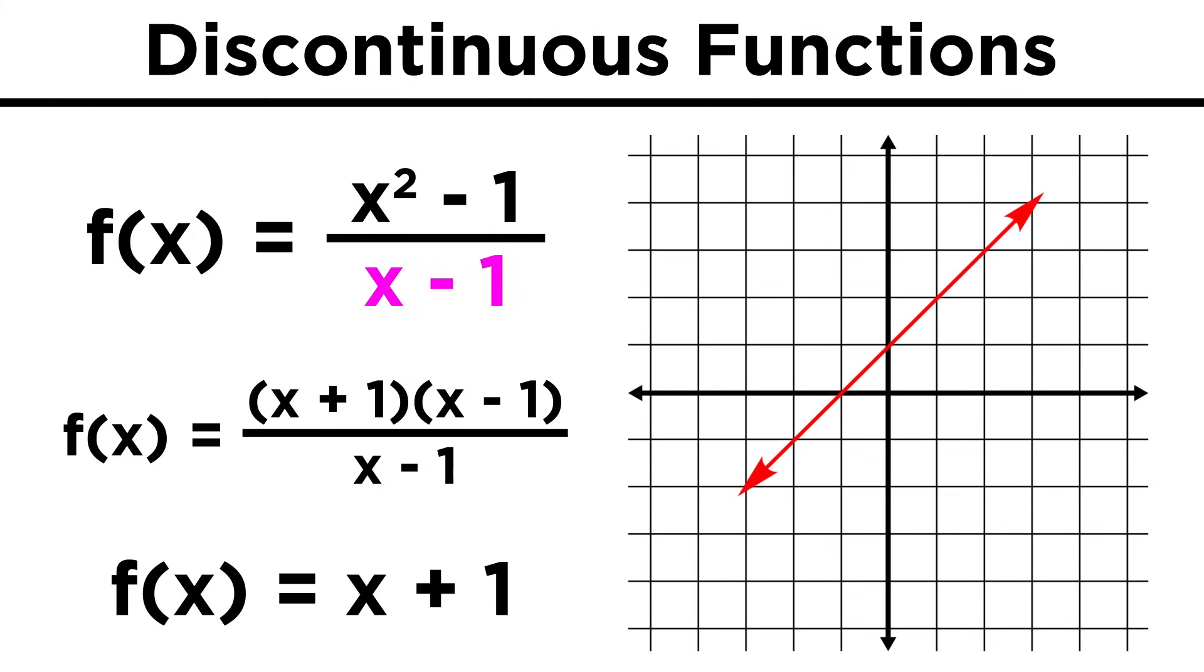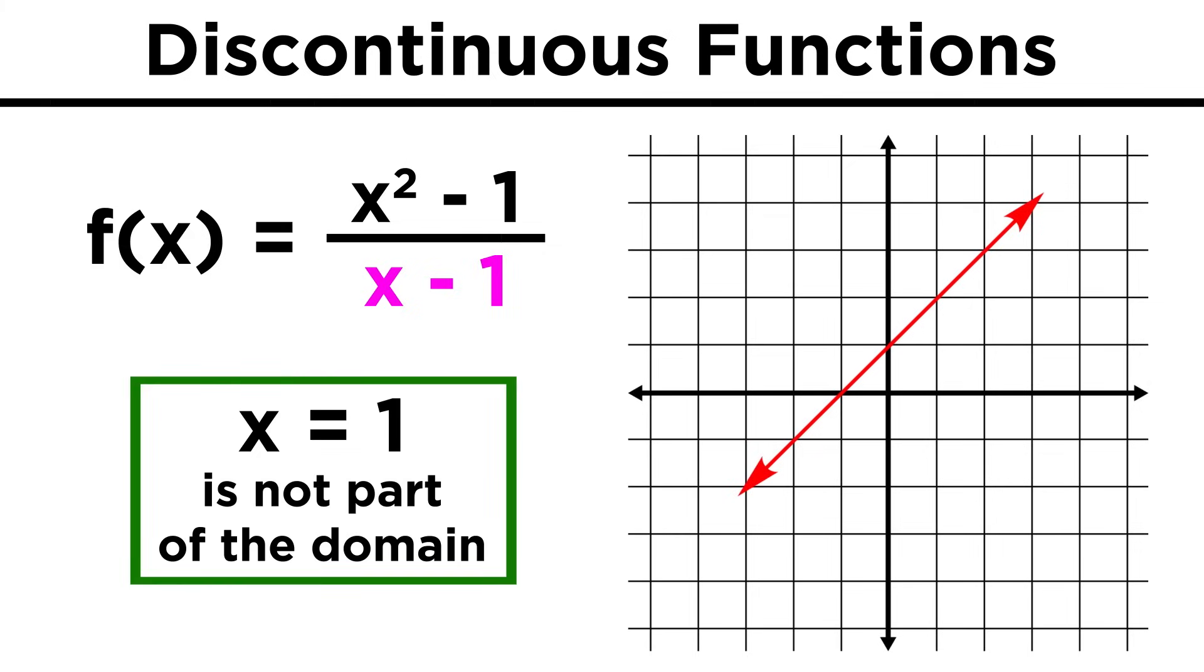Because the denominator can't equal zero, x can't equal one, and so one is omitted from the domain of this function. That means the line will have one discontinuity. There will be a hole at x equals one, where the function can't be evaluated.